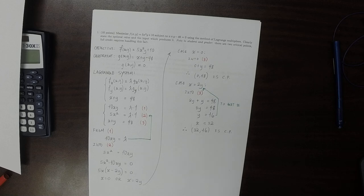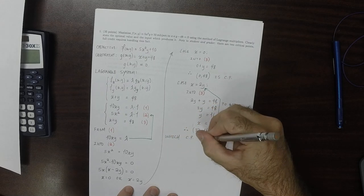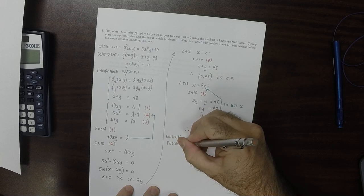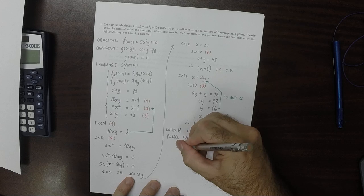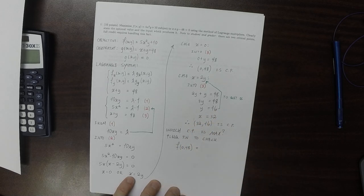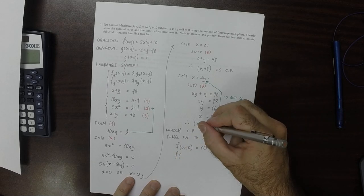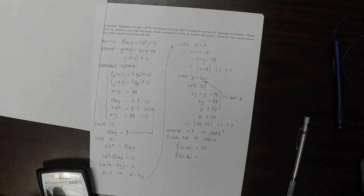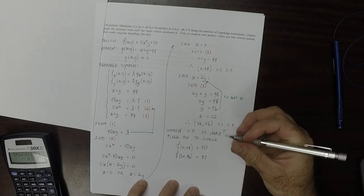Now we want to find the maximum, so the question is which critical point is the maximum? We'll plug in to check. So the objective evaluated at (0,48), plugging that into f gives us 10. And then the objective evaluated at (32,16) is 5 times 32 squared times 16 plus 10 is 81,930.